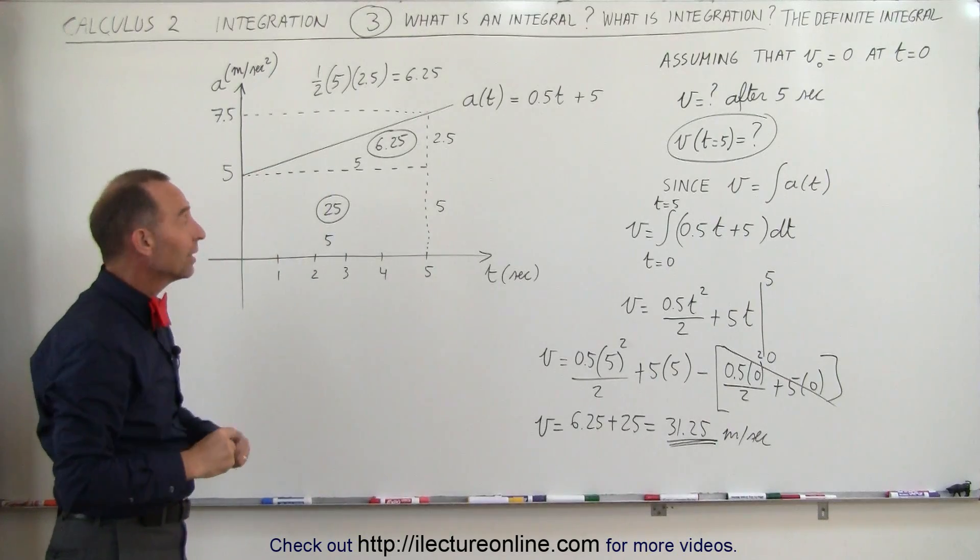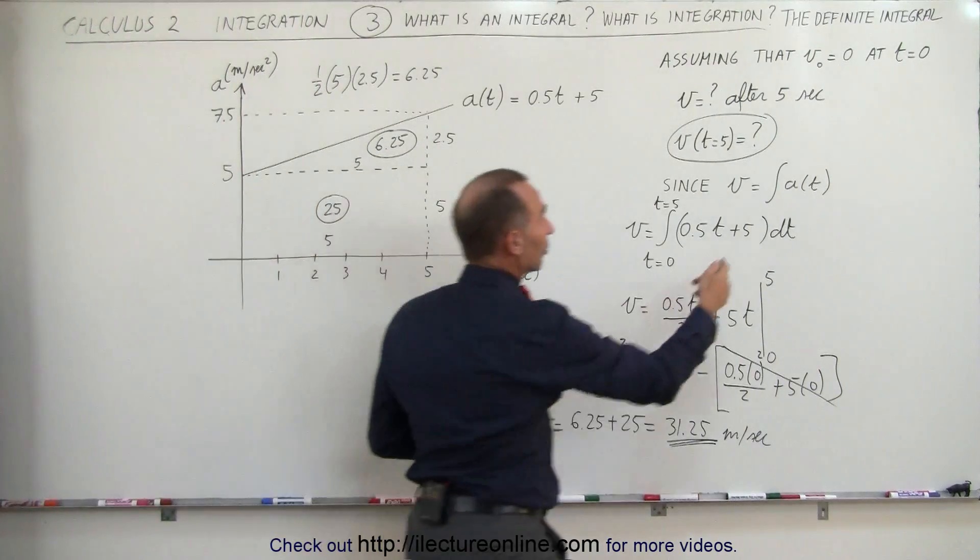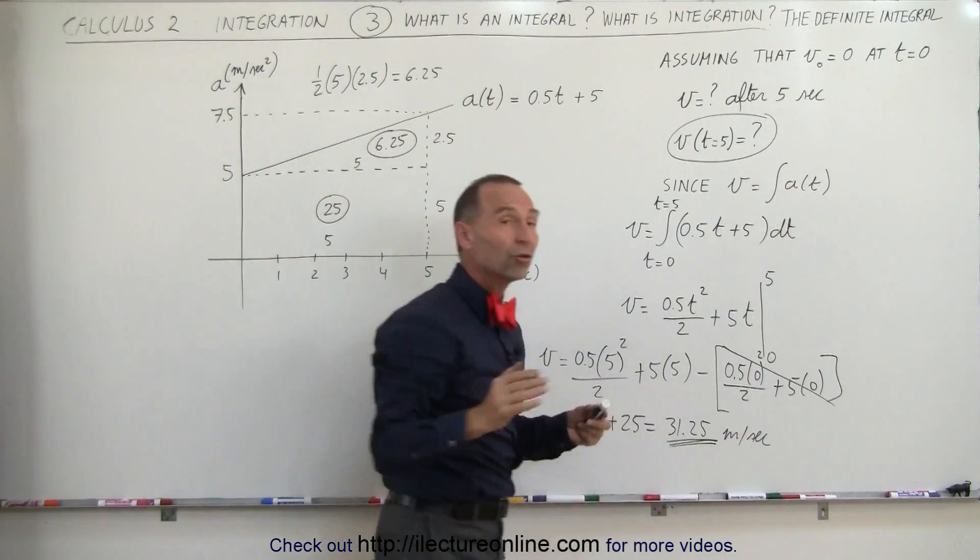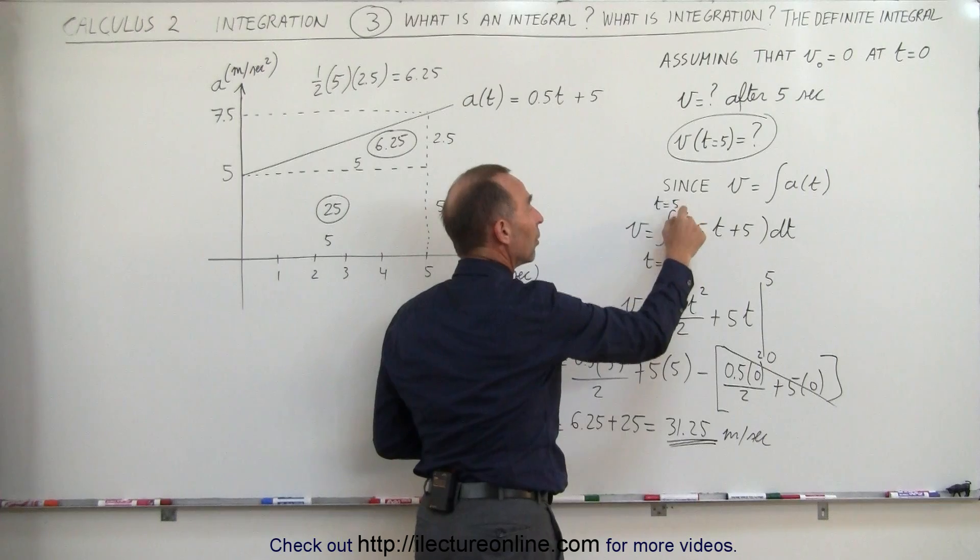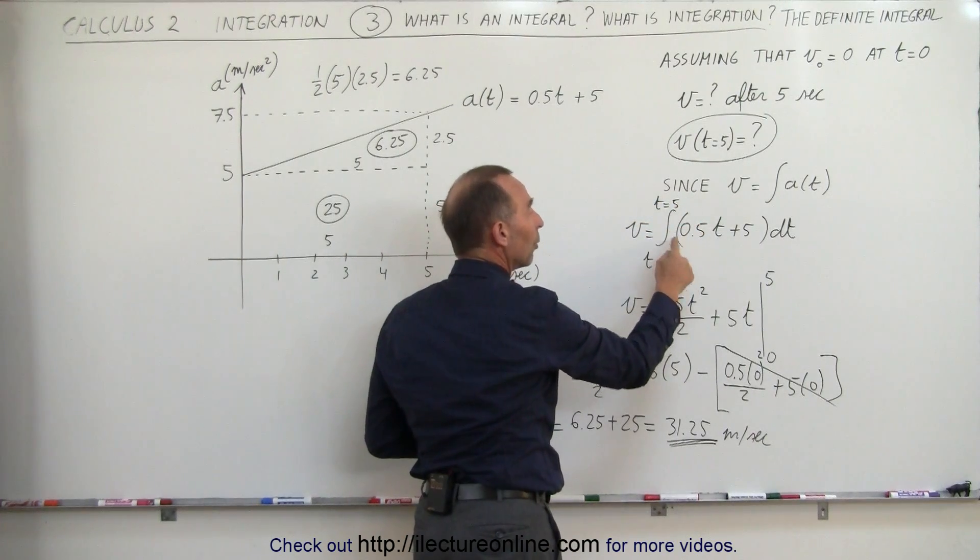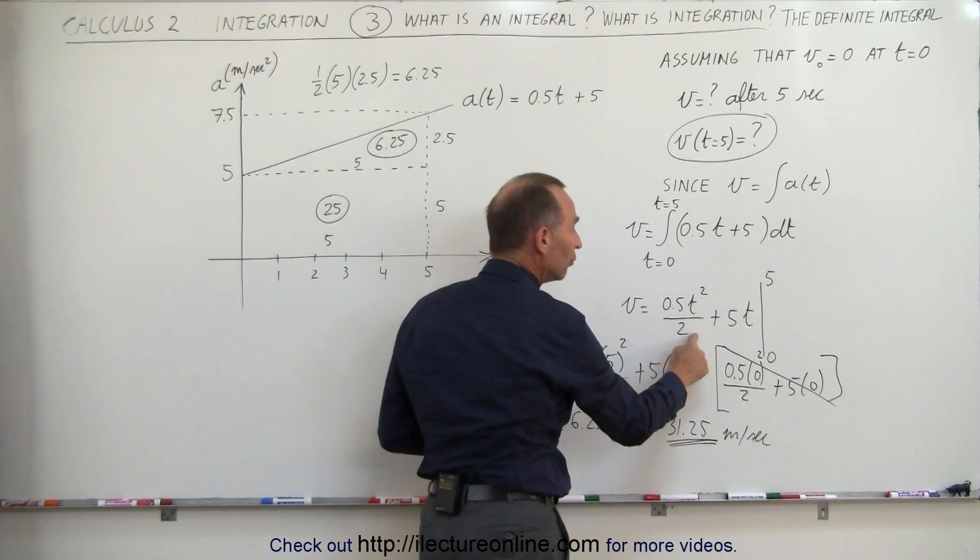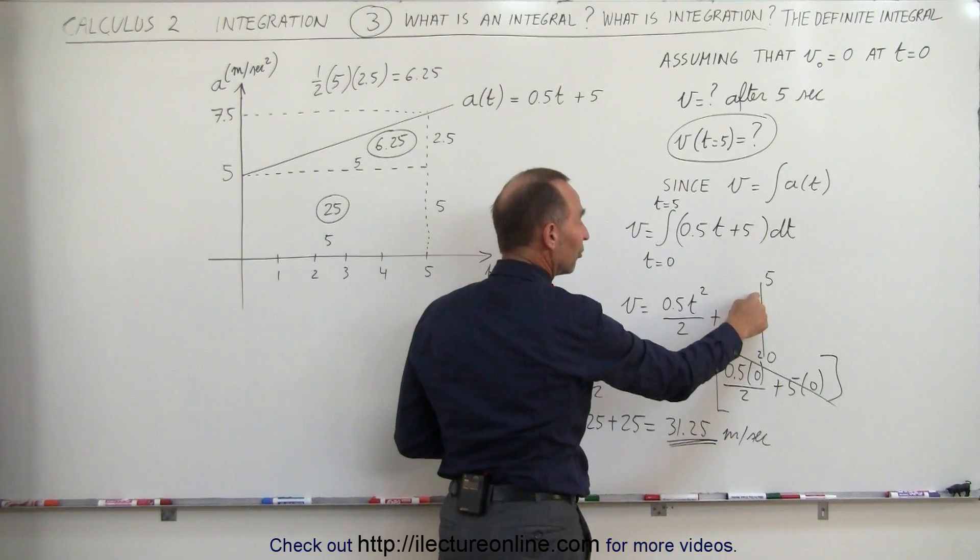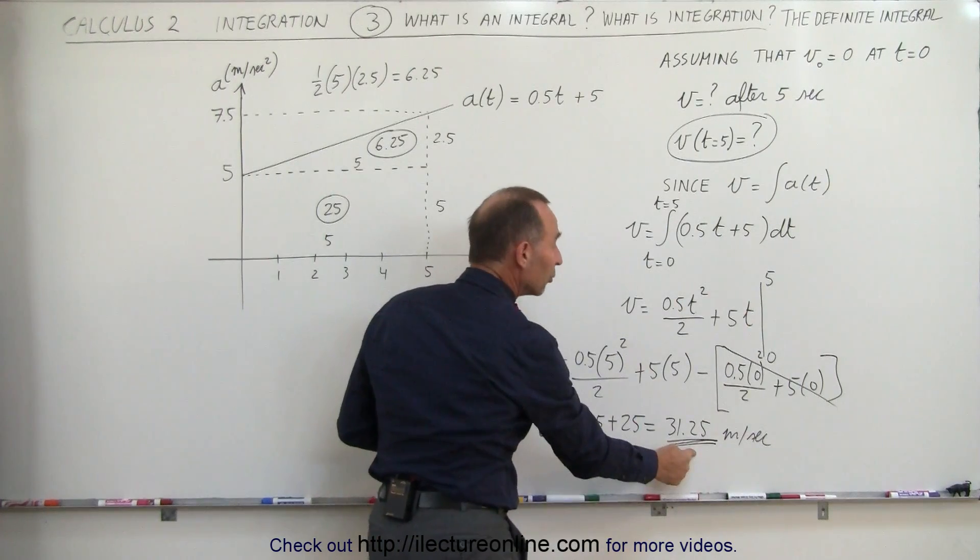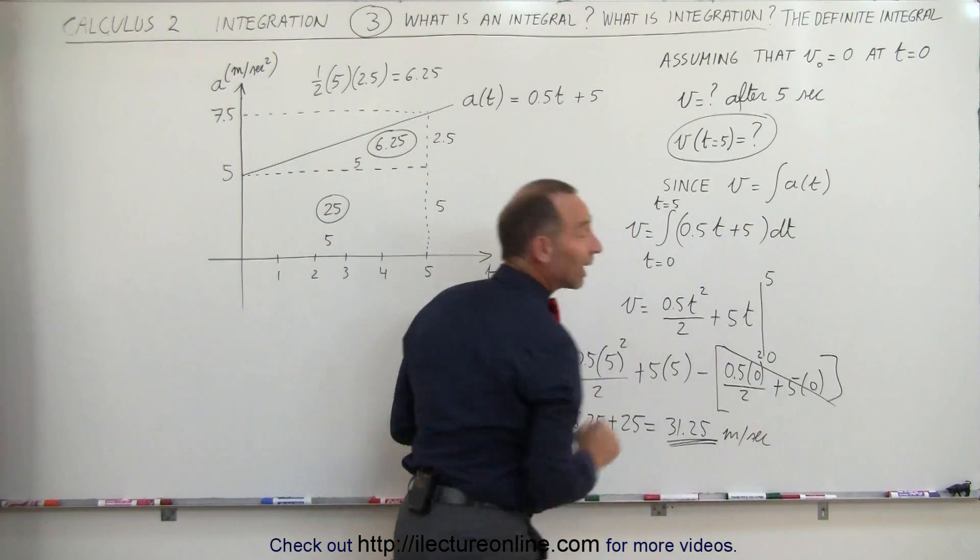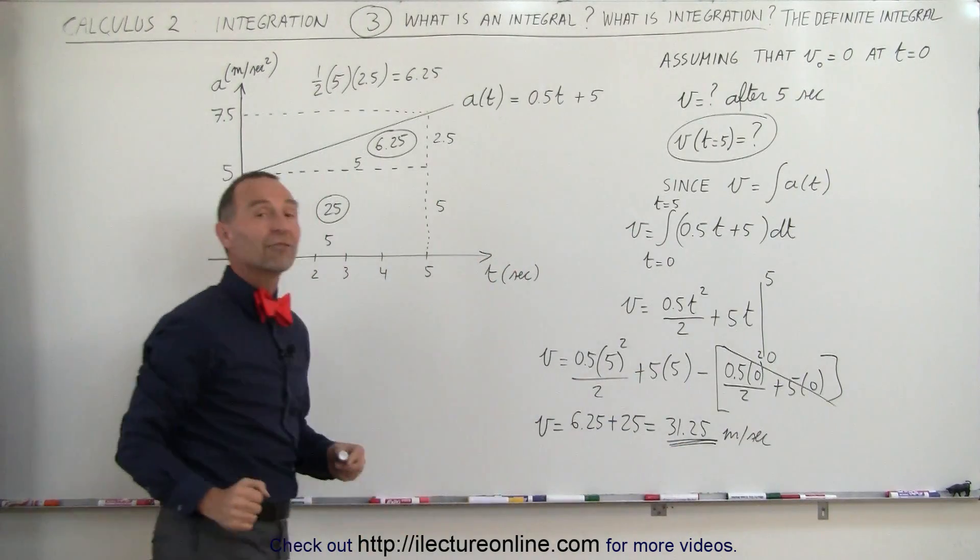Which shows that if we take the function, in this case acceleration is a function of time, and we take the integral of that function, we get the velocity, and then if we want to know what the velocity is after 5 seconds, we plug in the limits of integration as we call them. We put in the upper limit here, we put in the lower limit there. When we take the integral, we add one to the exponent on every variable, so this is 0.5 t squared divided by the new exponent plus 5 times t to the first power divided by 1, and then we put in the limits. When we plug in the upper limit, we get 31.25. When we plug in the lower limit, we get 0, and so this tells us that after 5 seconds, the car is moving at 31.25 meters per second.